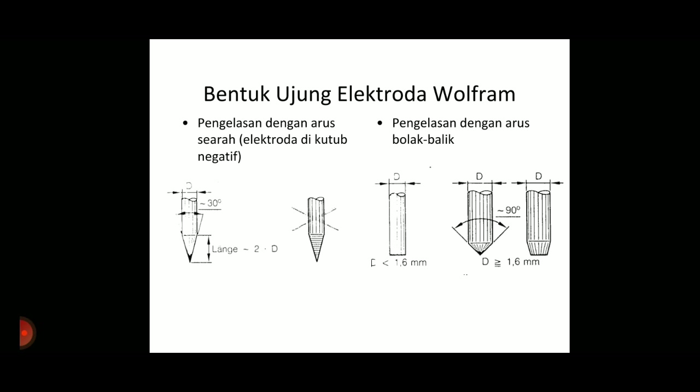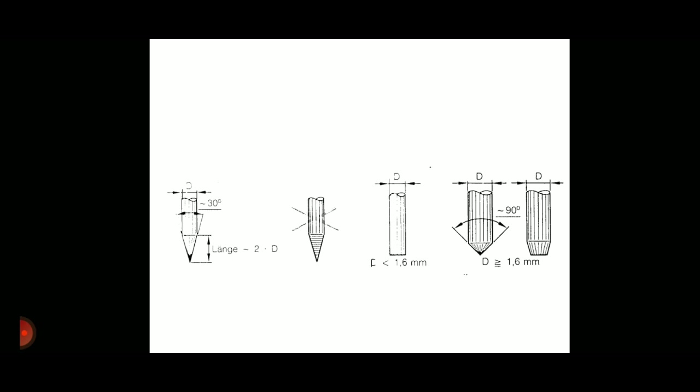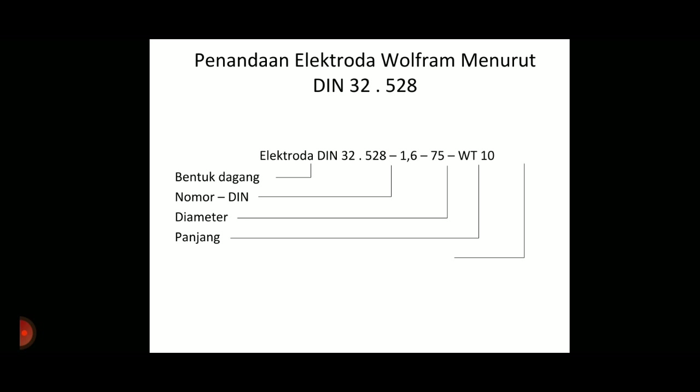Ujungnya untuk elektroda tungsten itu ada yang nanti lancip, ada yang tumpul, bahkan ada yang dibuat seperti bola. Untuk yang warna merah untuk ngelas baja karbon, nanti dibuat ujungnya lancip. Yang untuk ngelas aluminium, ujungnya tumpul. Tadi ya, kode.